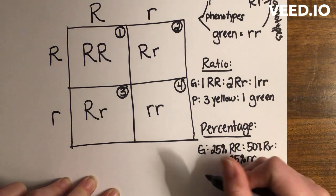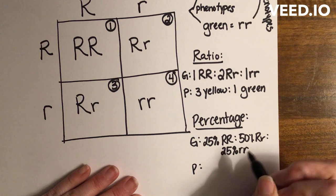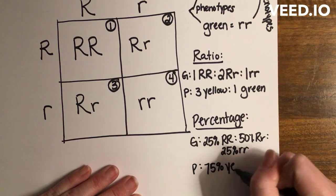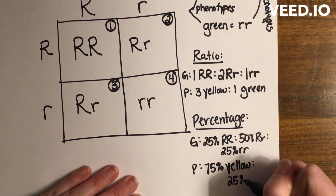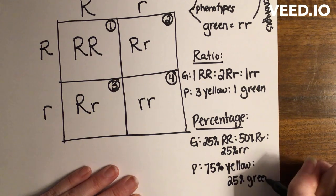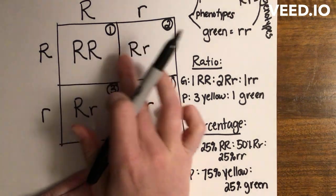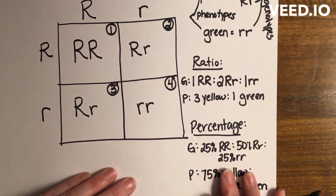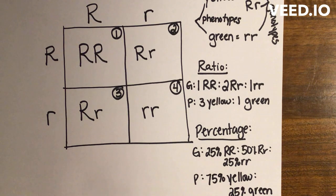If I wanted the phenotype percentages, I would say 75 percent chance of having yellow, 25 percent chance of having green. That's because, again, each box is 25 percent, but these three boxes code for yellow and this box codes for green. So the most important part is really to remember what are your phenotypes, what are your genotypes. Again, this is complete dominance.